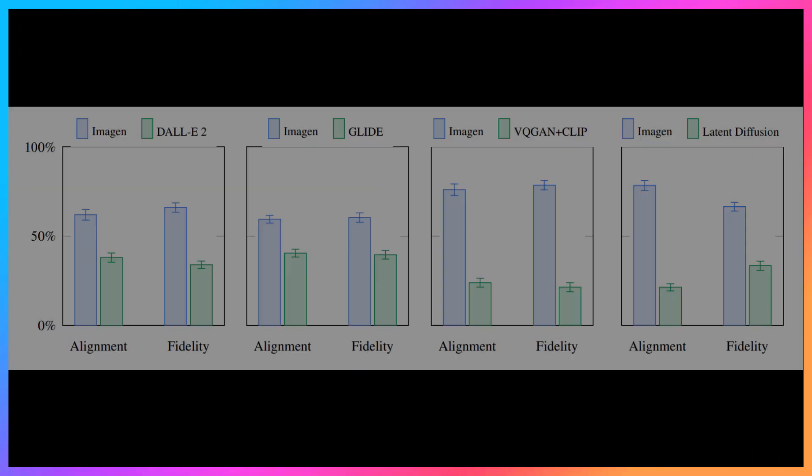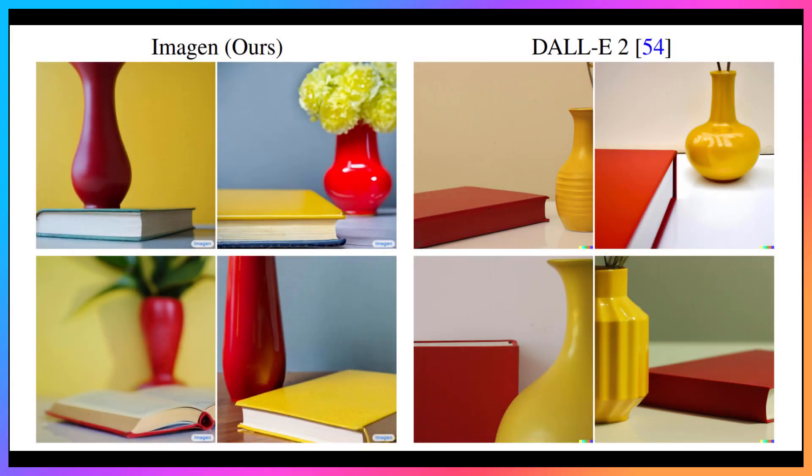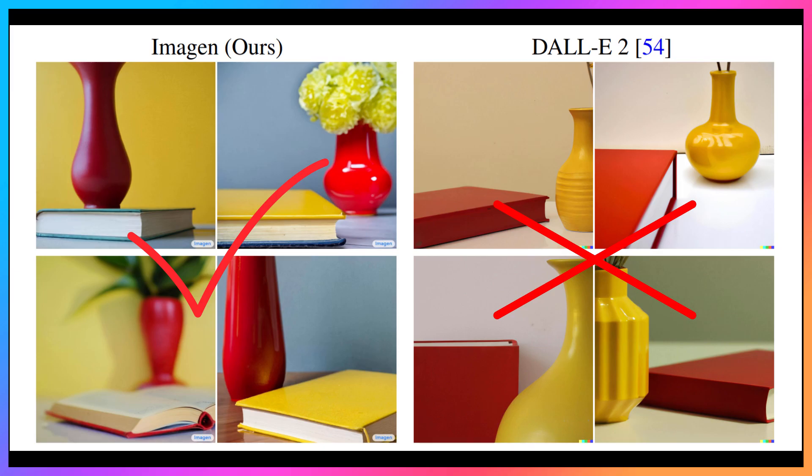Now this is the moment everybody has been waiting for: how and why Imagen beats DALL-E 2. We're going to give the same input to both models and see with our own eyes how DALL-E 2 is beaten by Imagen. Here we go — a yellow book and a red vase. Notice that Imagen chooses the right colors while DALL-E 2 chooses the opposite ones.